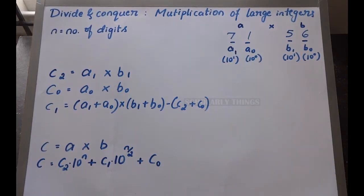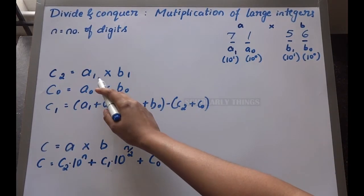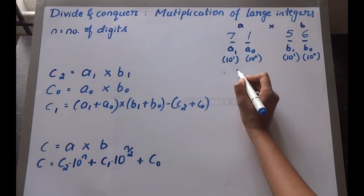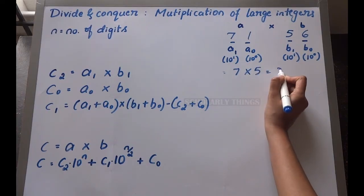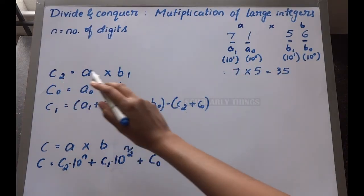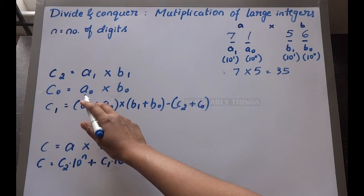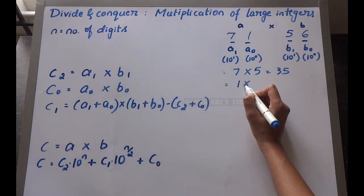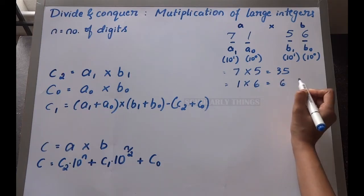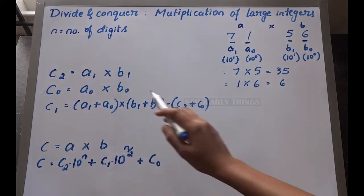c2 is equal to a1 × b1, so it will be 7 × 5, that is 35. So we found c2. c0 is a0 × b0, that is 1 × 6 = 6. So we found c0.